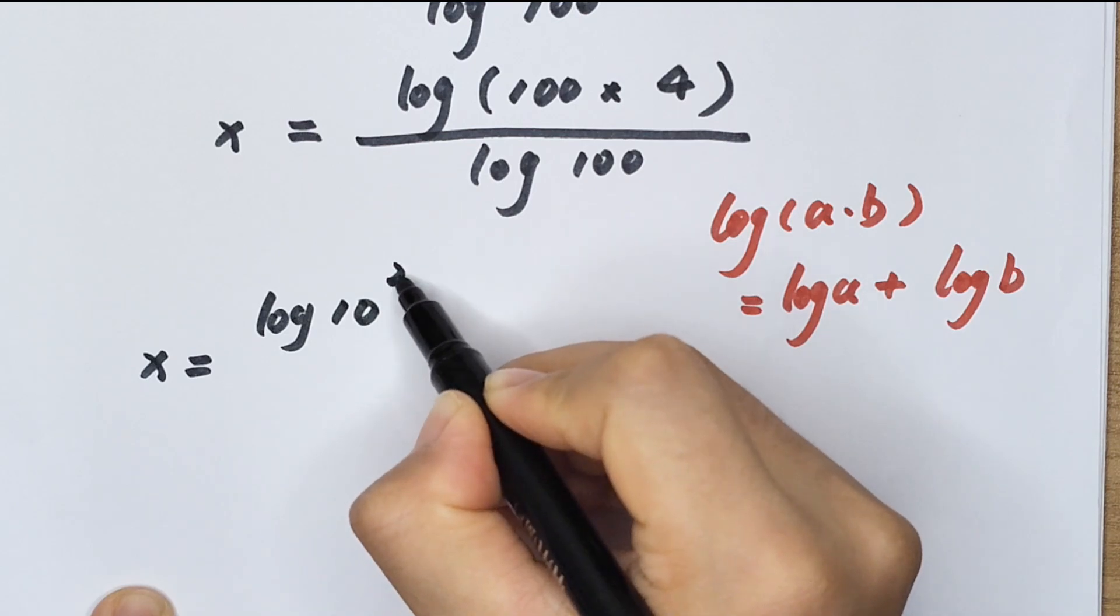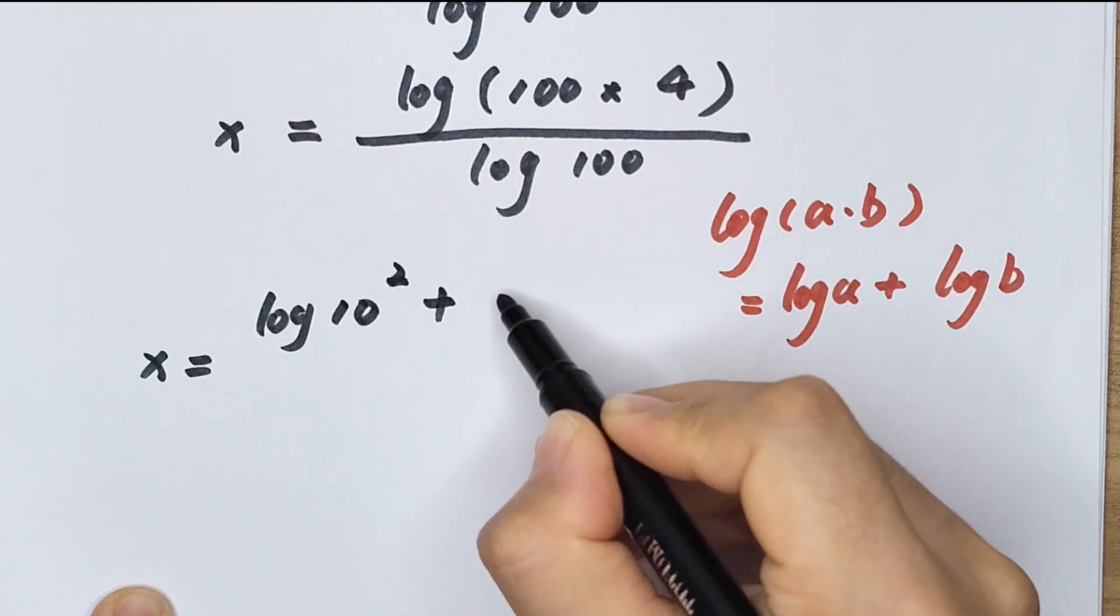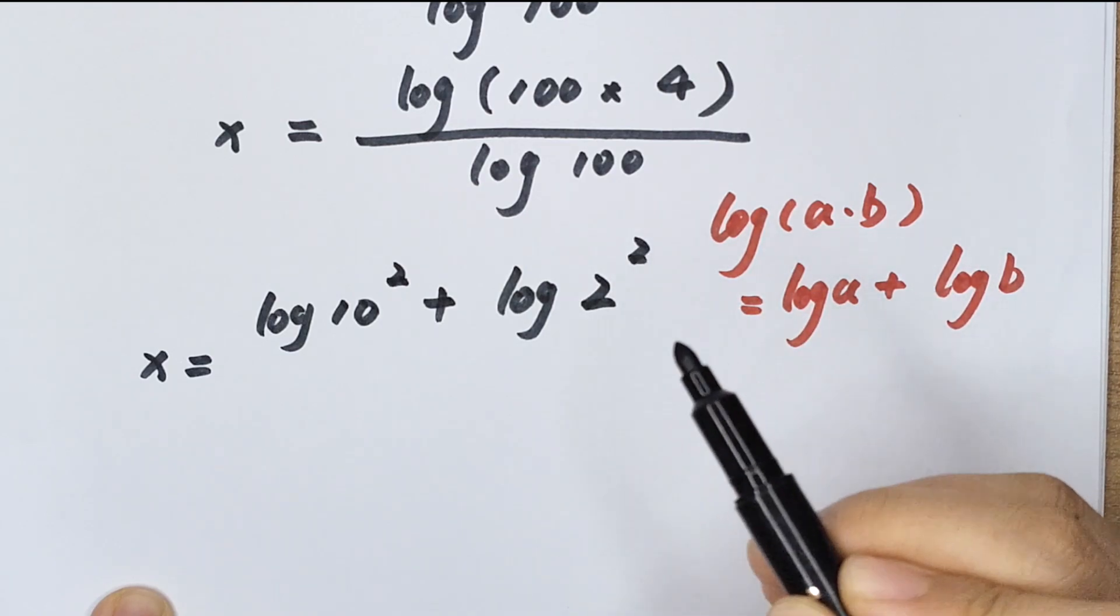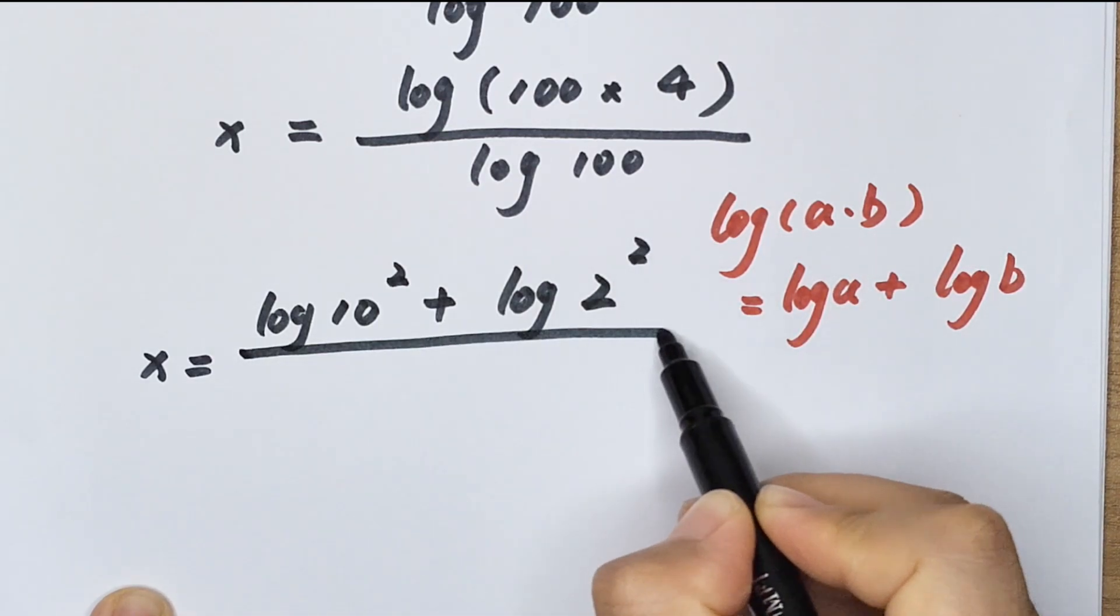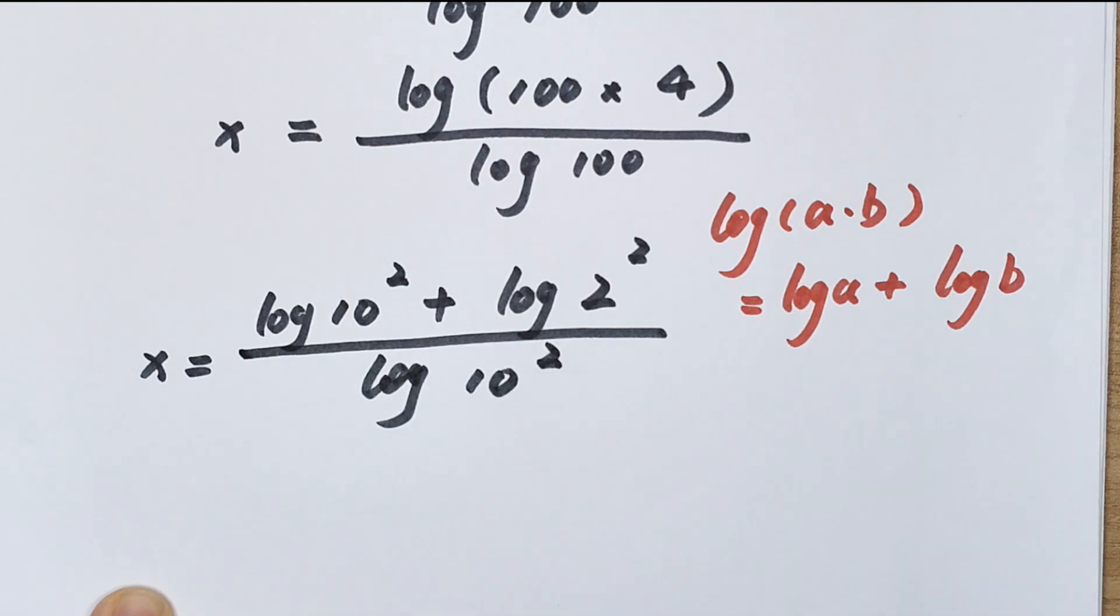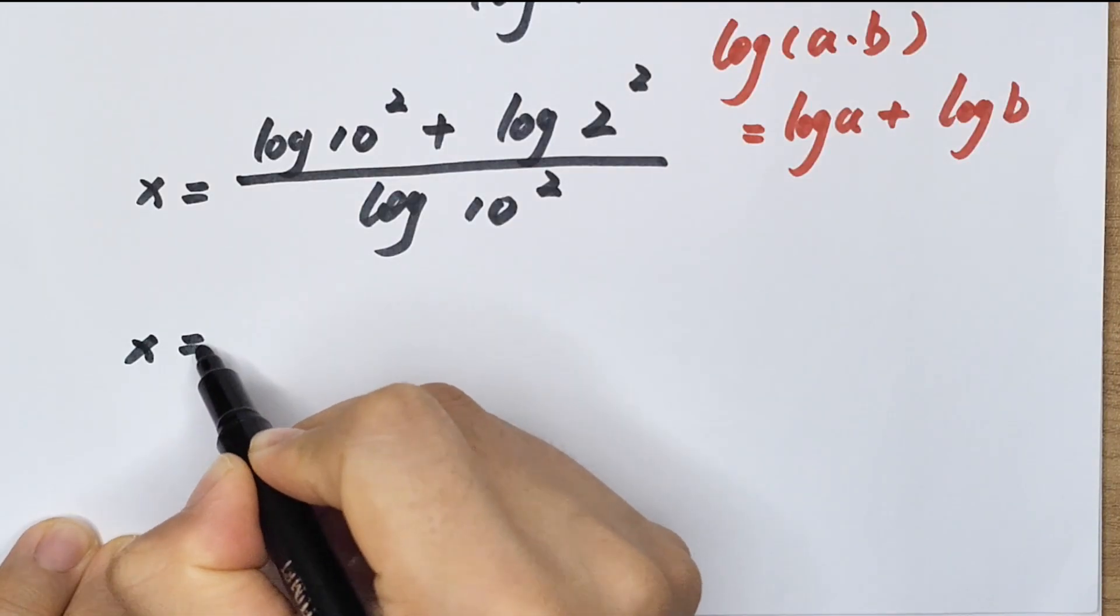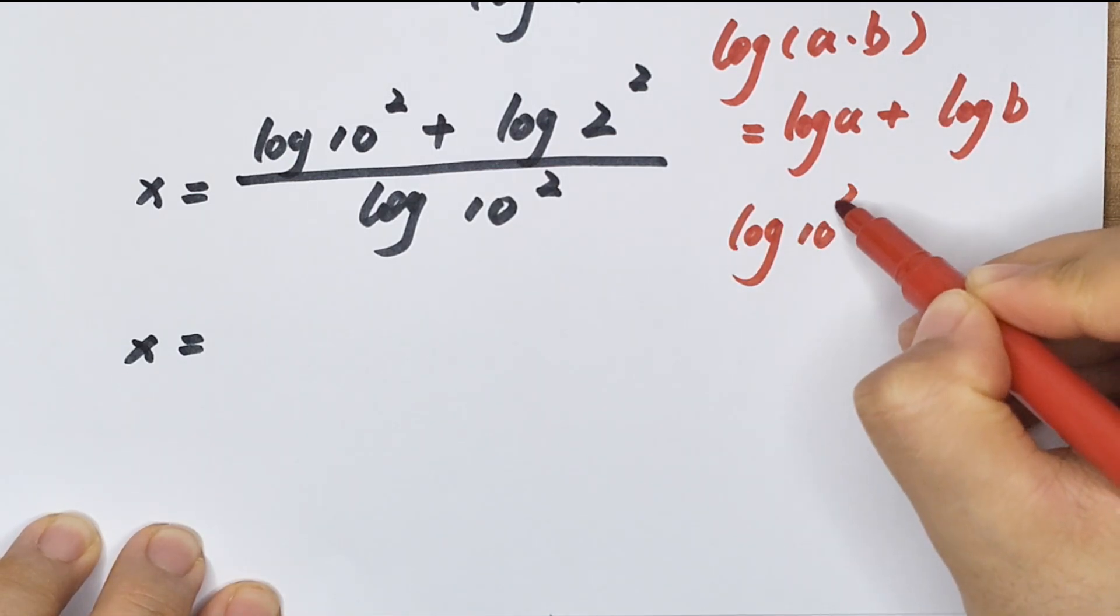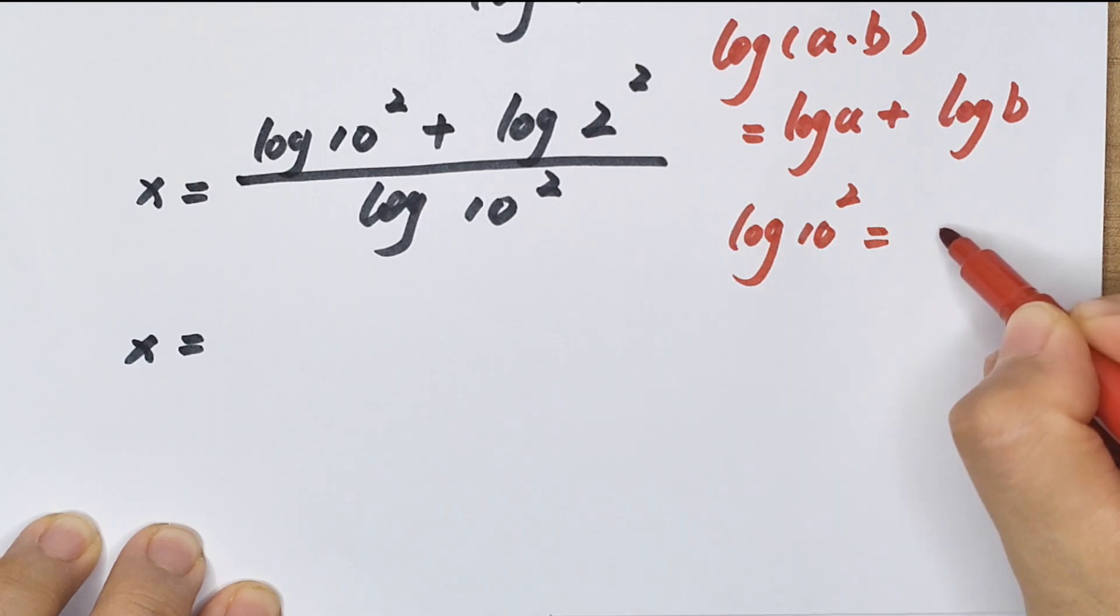So x equals log(10 squared) equals 2 log(10), and log(10) equals 1, so log(10 squared) equals 2.